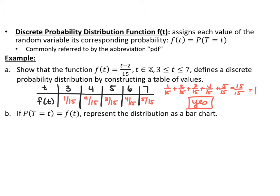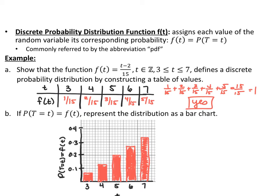Now we want to represent this probability distribution with a bar chart — not a histogram. A histogram has connected bars; a bar chart does not. The x values are 3, 4, 5, 6, 7, and the y-axis shows f(t). I made a bar chart with those values on the bottom, and the probabilities as decimals indicate how high each bar goes, representing the probability of each outcome.